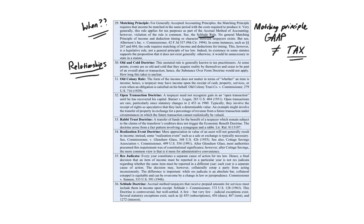Old Colony: the form of income does not matter in terms of whether an item is income — that's an income question. In Old Colony, the company paid the taxes of the employee, and that was considered income to the person; the form of income doesn't matter — paying taxes on someone's behalf can be considered income. The open transaction doctrine is mainly a 'when' question. A taxpayer need not recognize gain in an open transaction until he has recovered his capital — Burnett v. Logan is the main case. For certain installment sales where you're getting payments over time, you are actually able to recover all of your basis up front before you have to record a percentage of gain until it gets fully recovered.